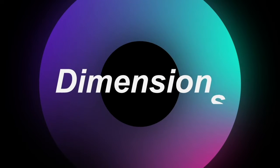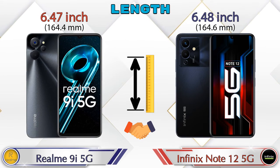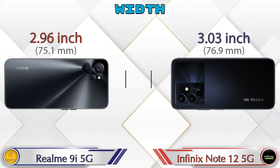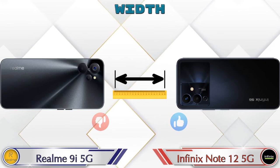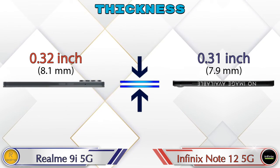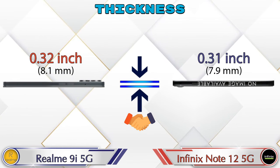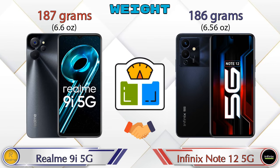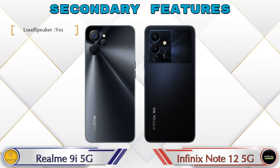Now let's check the dimensions. Length: the 9i 5G is 6.47 inches and the Note 12 5G is 6.48 inches — almost the same. Width: 9i 5G is 2.96 inches and the Note 12 5G is 3.03 inches. Thickness: 9i 5G is 0.32 inches and the Note 12 5G is 0.31 inches — almost similar. Weight: 9i 5G is 187 grams and the Note 12 5G is 186 grams — almost similar.